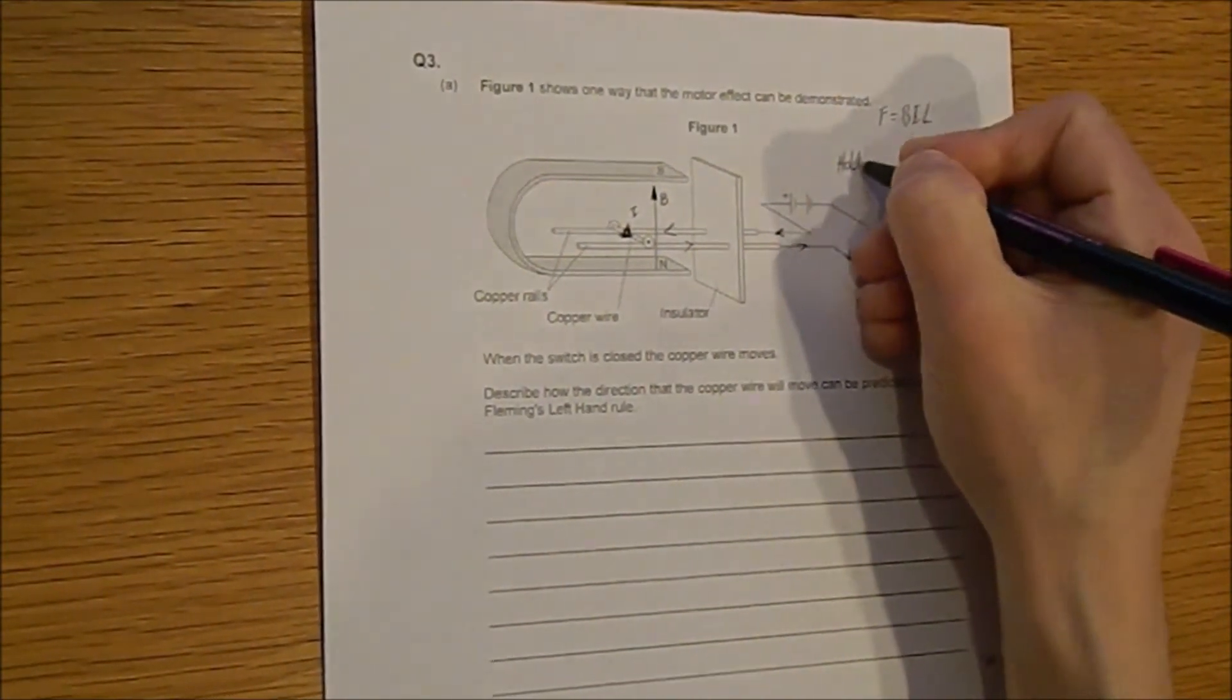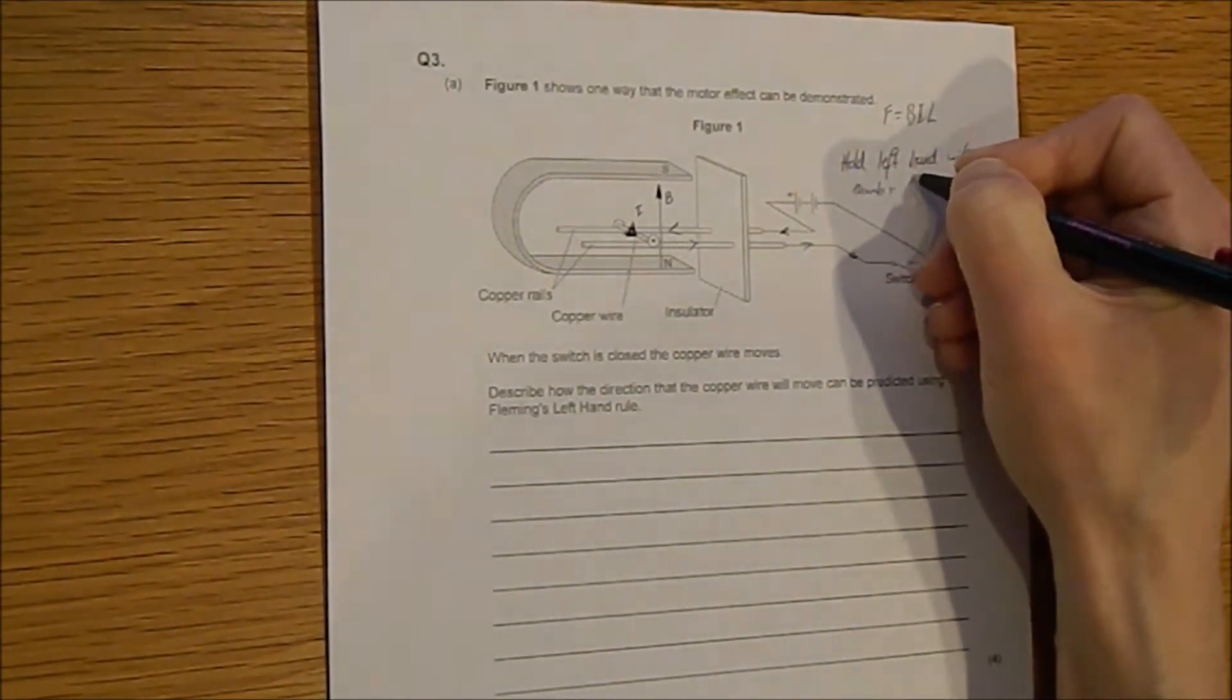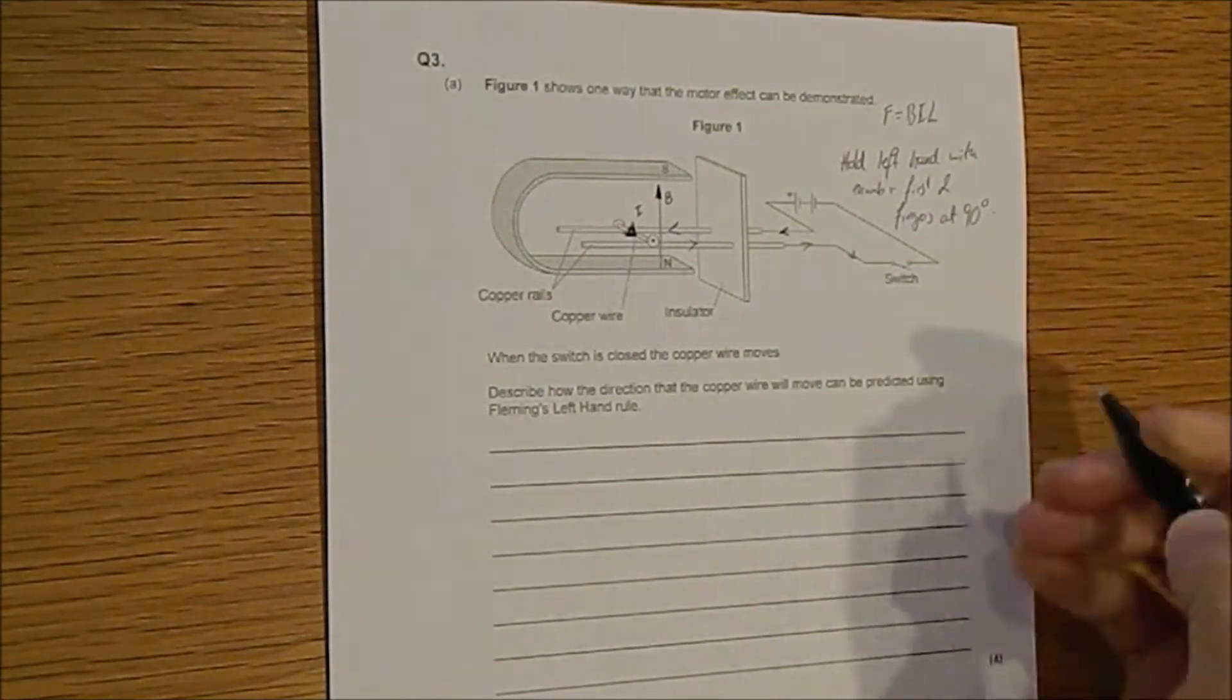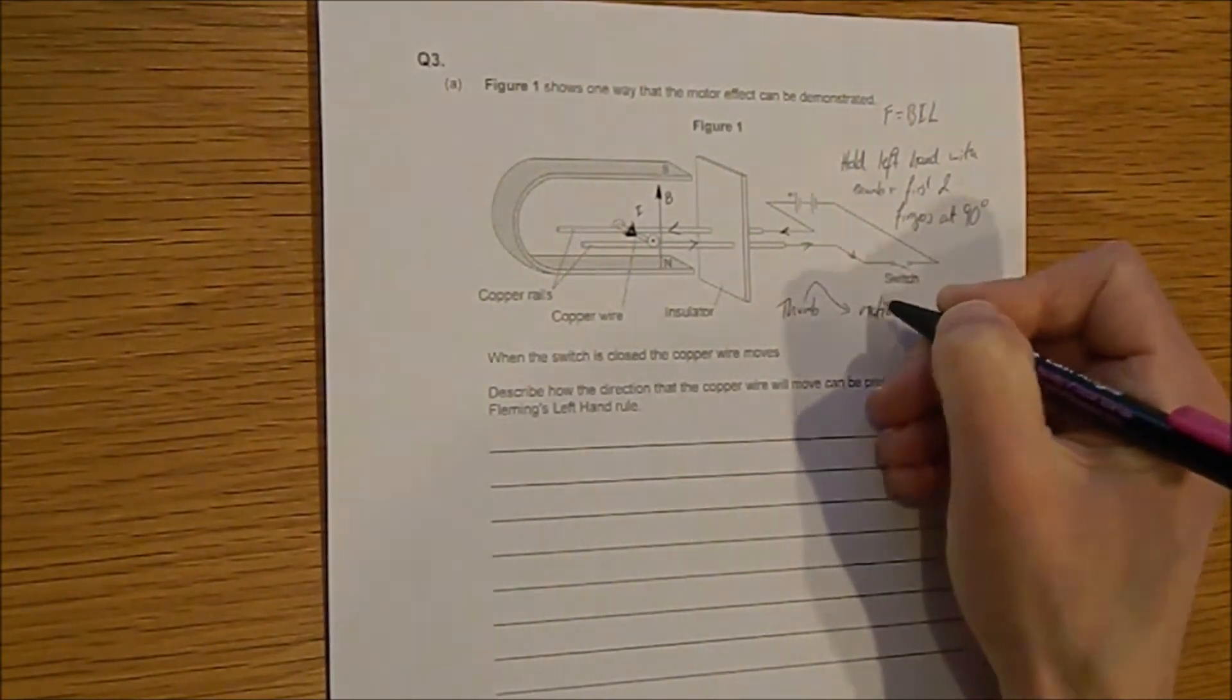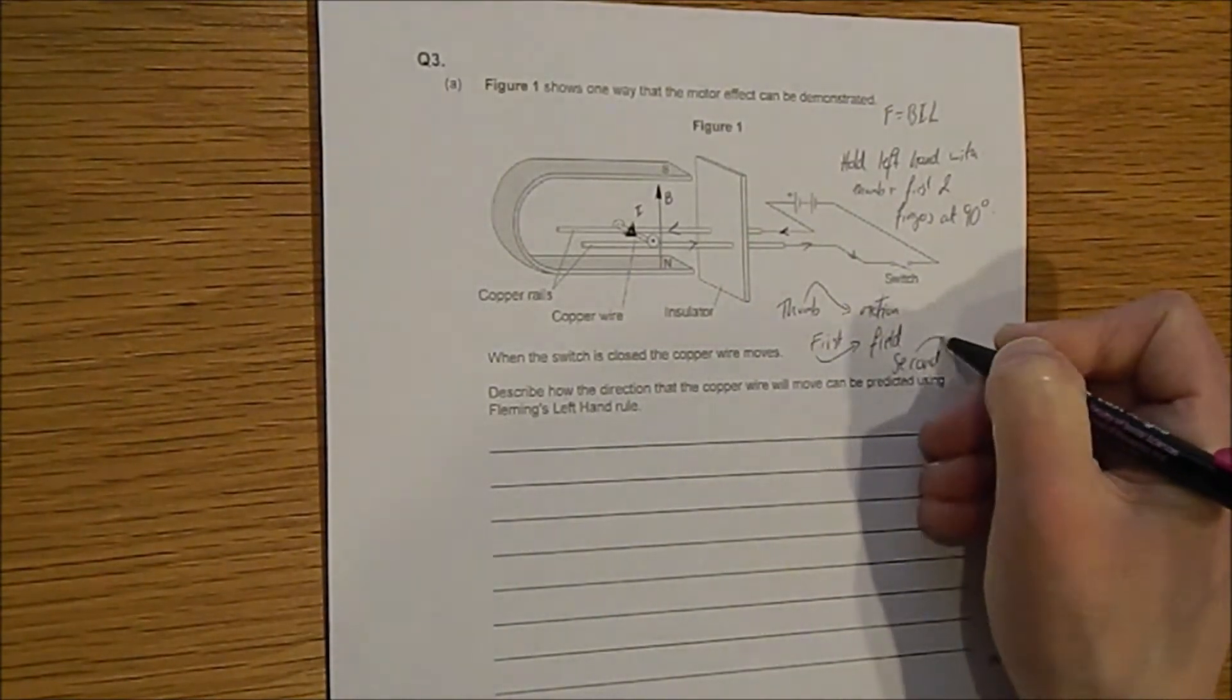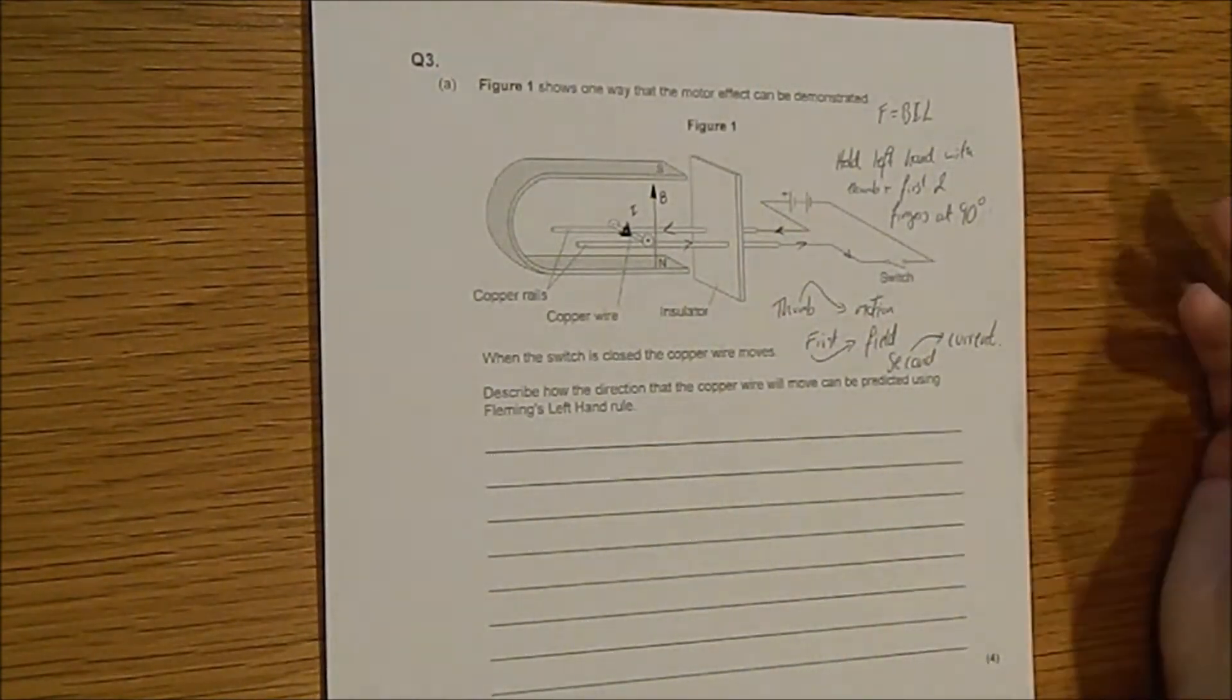So hold left hand with thumb and first two fingers at 90 degrees. Fleming's left hand rule, thumb, the M stands for motion, first finger is field, second finger is current. You're just using up your spare space. This is not going to be marked, these bits here, but it just allows you to think before you answer.